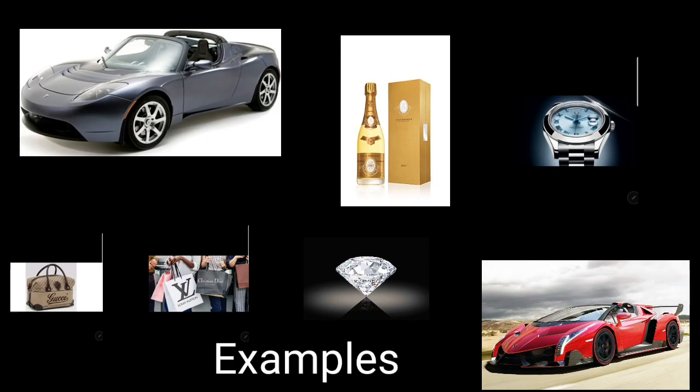Some common examples of Veblen goods include luxury cars, designer bags, wines, champagne, diamonds, Rolex watches, fast cars, and fine jewelry.